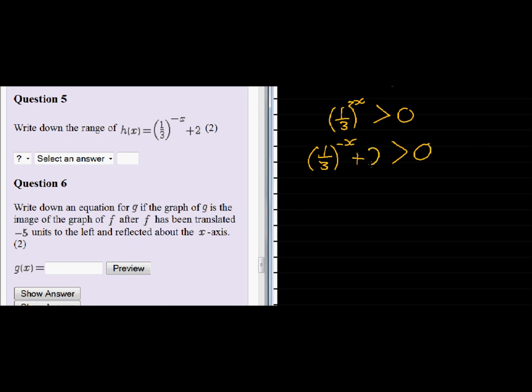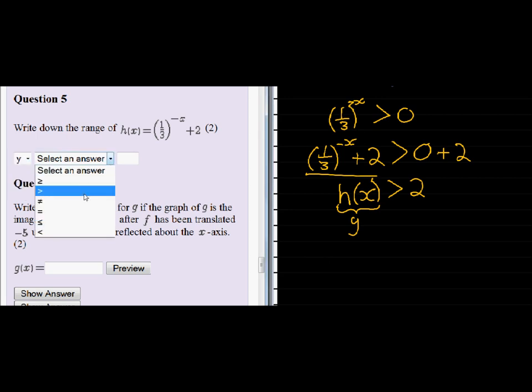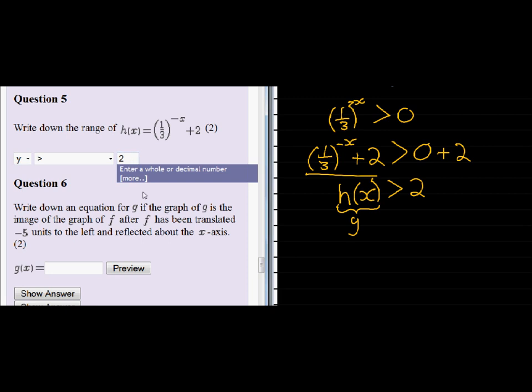I now continue to add a 2 so that I actually have h(x), then I just added 2 on both sides. So I can see that h(x), which is that expression, will always be larger than 2. So the y values—remember h(x) represents the y values—will be larger than 2.